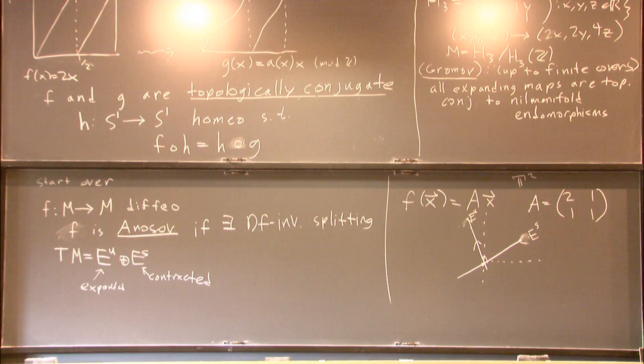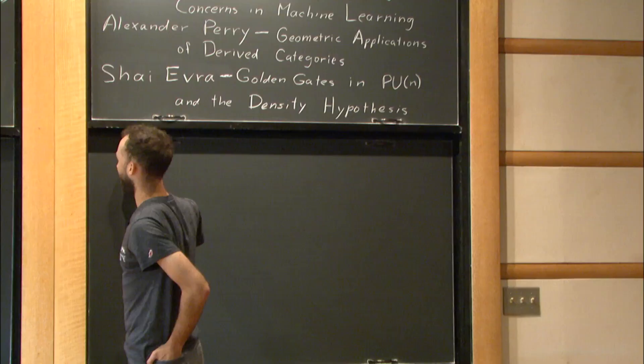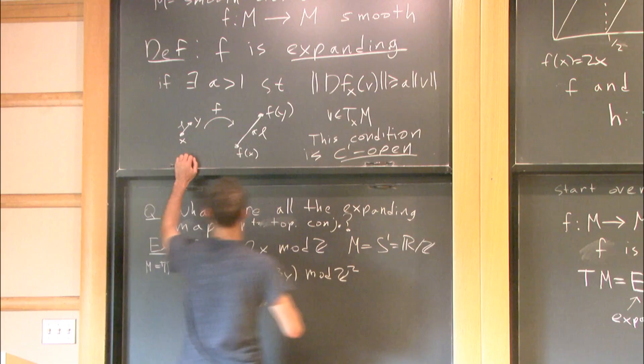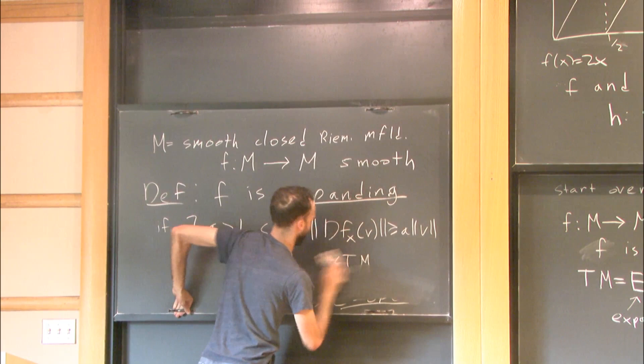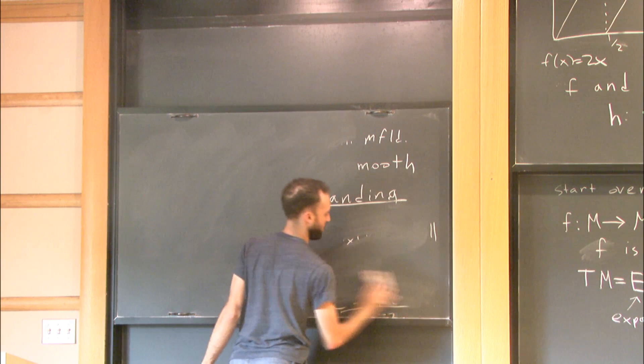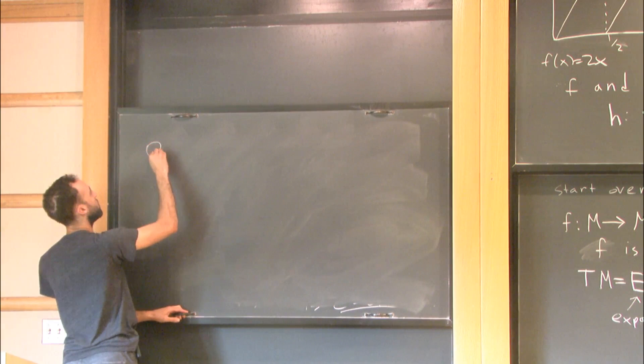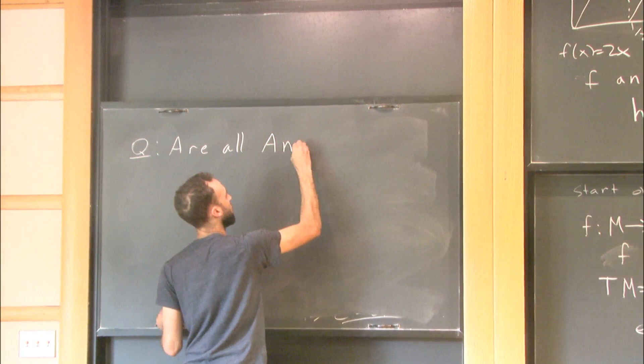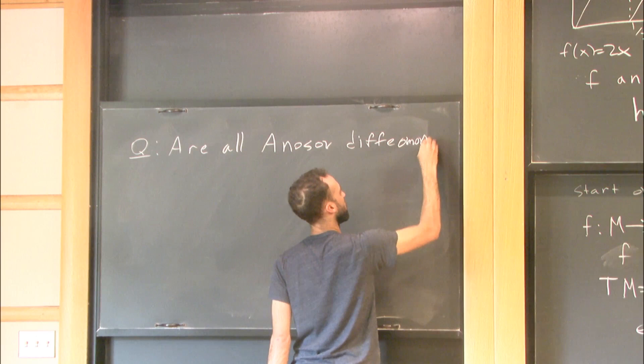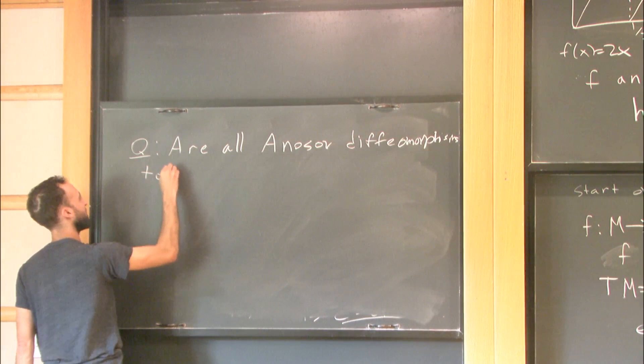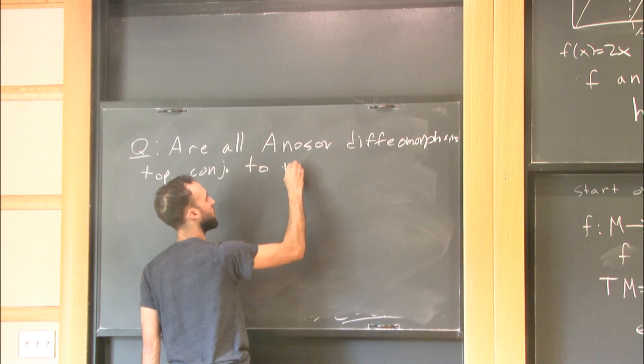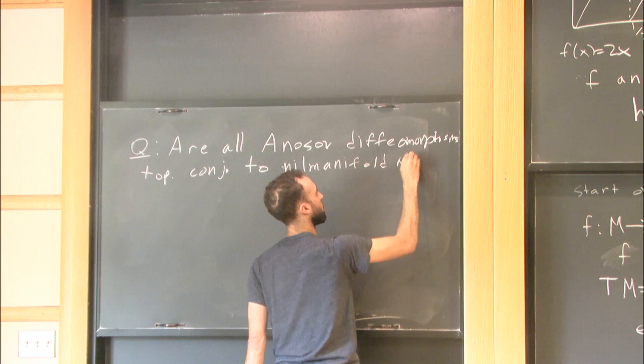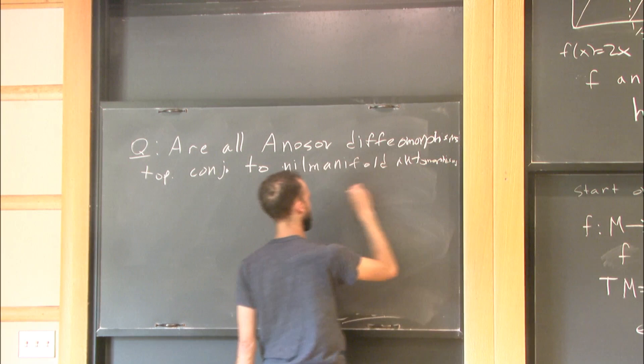And you can ask a similar question, which is a now notorious open question. I will phrase it as follows. Question. Are all Anosov diffeomorphisms topologically conjugate to nilmanifold automorphisms. And I'll add up to finite covers.